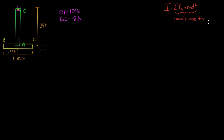The parallel axis theorem says that if we know the moment of inertia about the center of mass of some object, we can figure out the moment of inertia about any parallel axis by modifying the equation with this md squared, where d is the distance to the parallel axis. And if we add all these up, or subtract them, we can figure out the moment of inertia of a system.